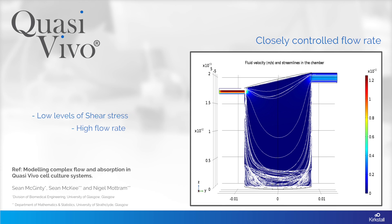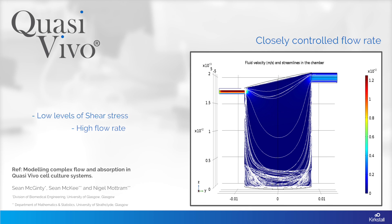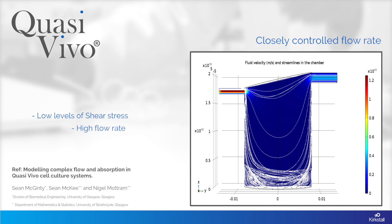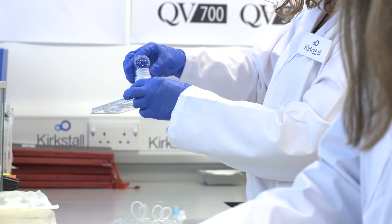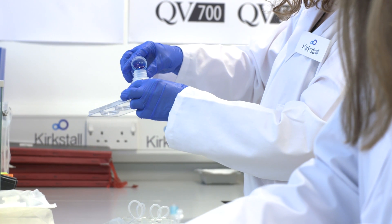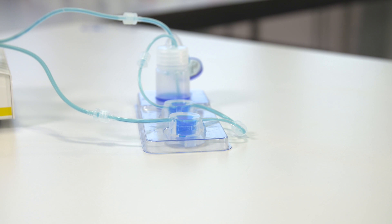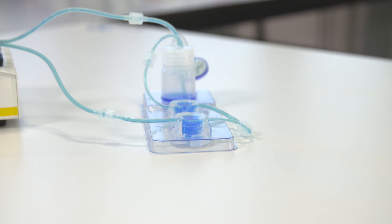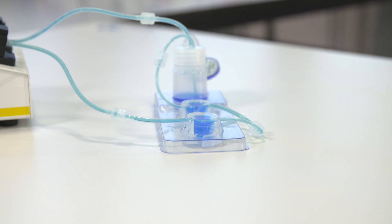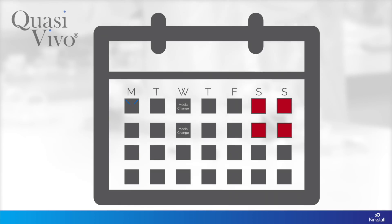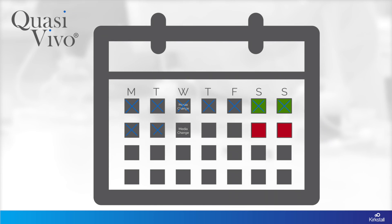The chamber geometry ensures low levels of shear stress are applied to the cells within the chamber using relatively high flow rates as delivered by the pump. The recirculating media reduces the need for frequent media changes by allowing the cells themselves to condition their own environment and maintain this for over several days. This leads to reduced perturbation of the system and gives you your weekends back.